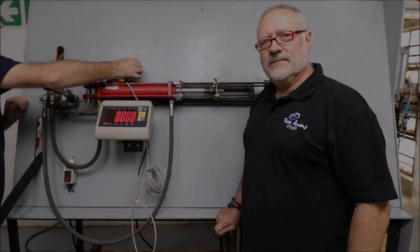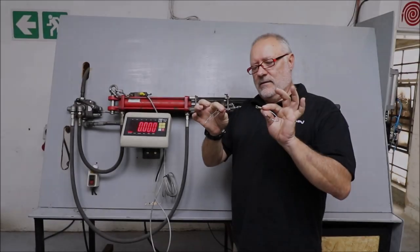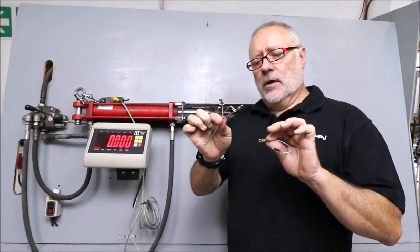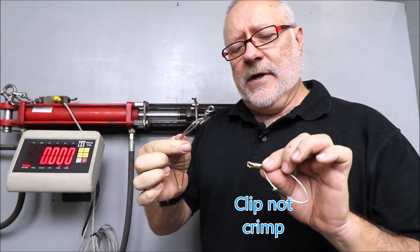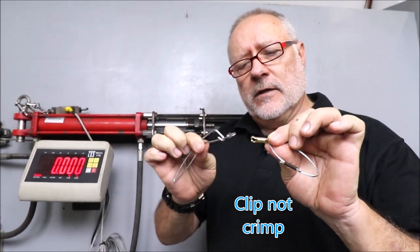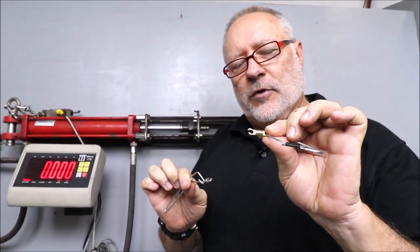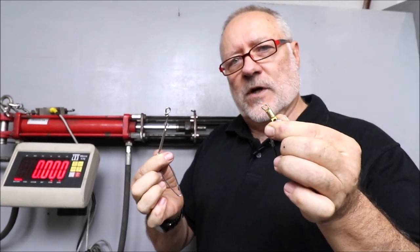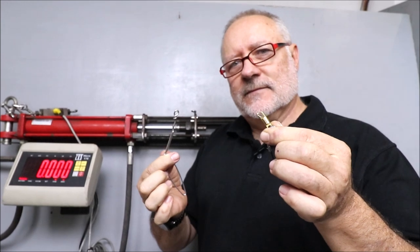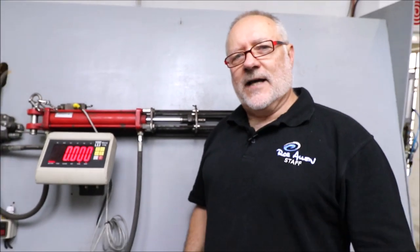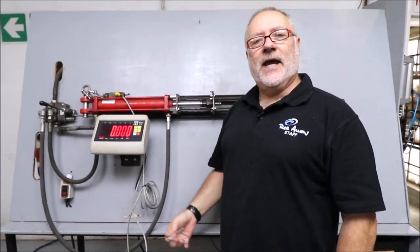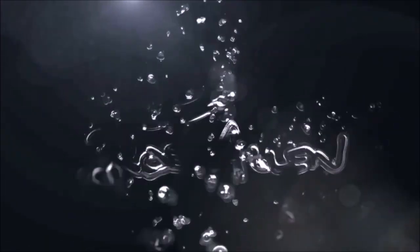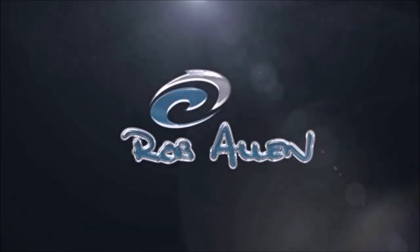Well there you have it. The actual crimp itself did distort quite a bit. The swivel broke, and you would have seen at what pressure that broke at. The swivel was the weak point in this case. And there you have it. That's how we test our swivels and clips.